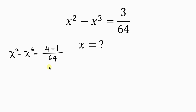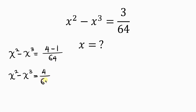Now why did I do it like this? It is because 4 is a perfect square that is closer to 3. Our next step will be for us to split this fraction, so we have x squared minus x cubed equal to 4 all over 64 minus 1 all over 64.